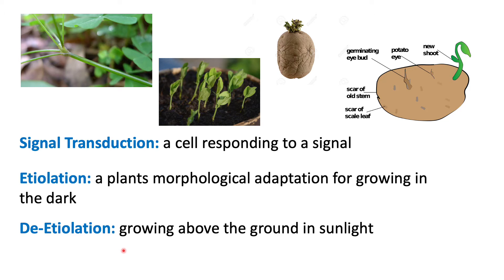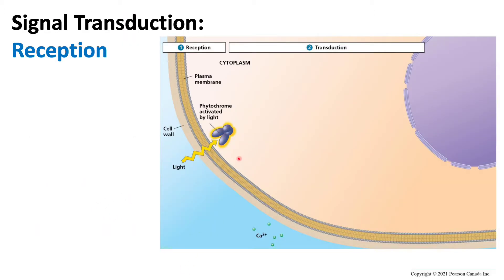During de-etiolation, we'll see the greening of the plant and more chloroplasts being produced, whereas etiolation is growing underground. If we look at how de-etiolation begins, the first step is reception — and what are we receiving? We are receiving light. That potato starts growing, experiencing etiolation, and the stem will continue to elongate until it reaches the surface.